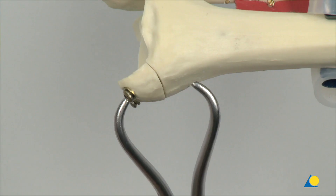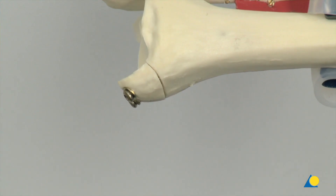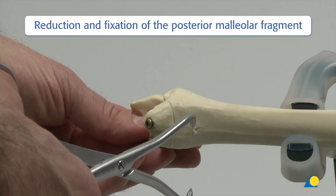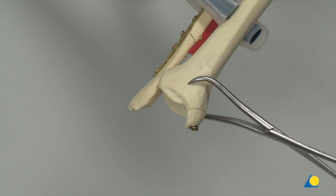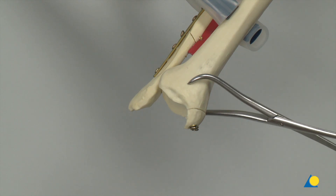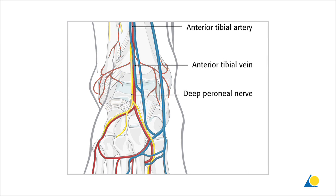The next step is the reduction and screw fixation of the posterior maleolar fragment from anterior. Clinically, it is important to allow visualization of the tibia in order to avoid damaging soft tissue and neurovascular bundles during drilling and screw placement. A stab incision is made anteromedial in order to be perpendicular to the fracture of the posterior maleolus, and L-shaped retractors are placed to gain visibility of the anterior tibia.